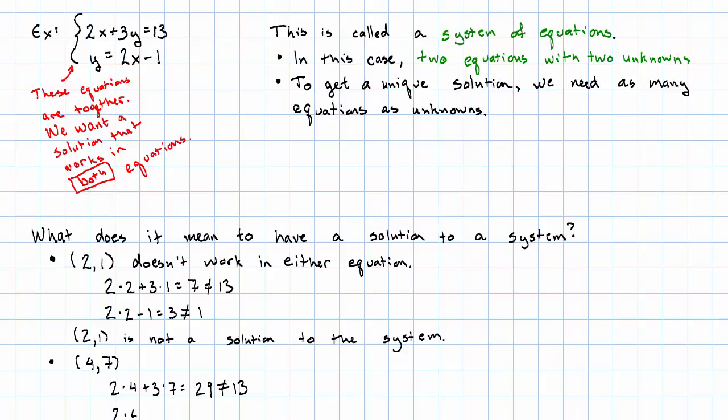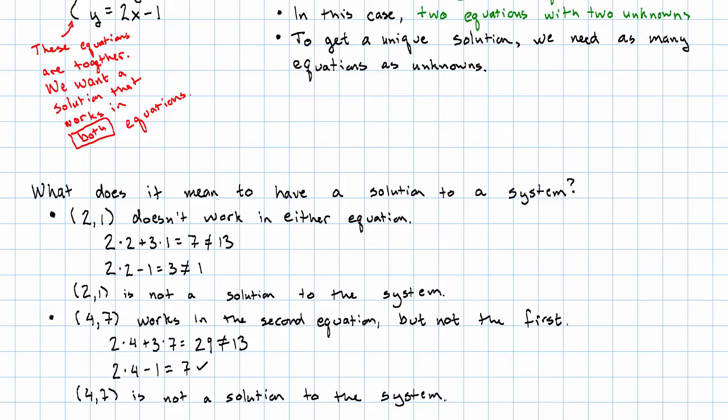2 times 4 minus 1, that does equal 7. So 4, 7 works in the second equation, but not the first equation. So 4, 7, also not a solution to the system.